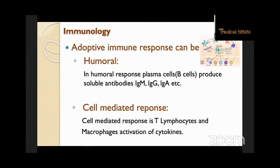In the adaptive immune response, there is humoral response where plasma cells — B cells — produce soluble antibodies like IgM, IgG, and IgA. In cell-mediated response, T-lymphocytes and macrophages are activated through cytokines.